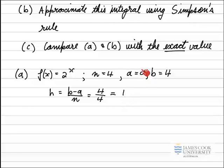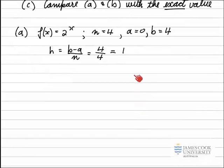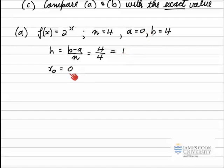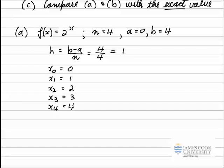Starting at x₀ = 0 and stepping out by H = 1 each time: x₀ = 0, x₁ = 1, x₂ = 2, x₃ = 3, x₄ = 4, ending at the top limit. Just checking: 4 intervals gives 5 x values, which is correct.